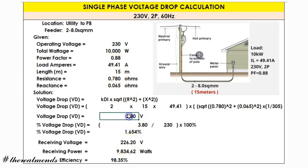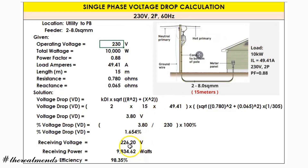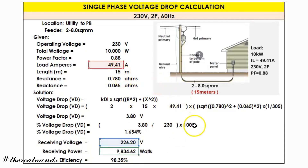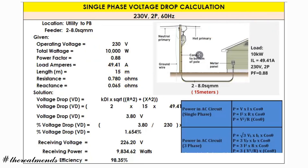To get the receiving end voltage, subtract the voltage drop from the source voltage: 230 volts minus 3.80 volts equals 226.20 volts. So from the utility at 230 volts, after reaching the house, the voltage is reduced by 3.80 volts, leaving 226.20 volts at the receiving end. The receiving power for a single-phase system is calculated as voltage times current times cosine theta (power factor).